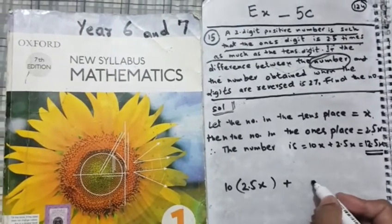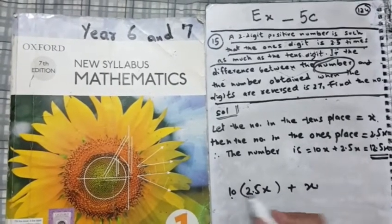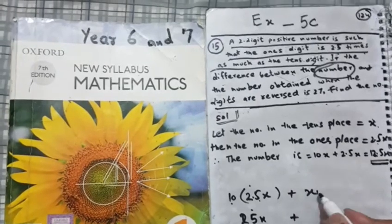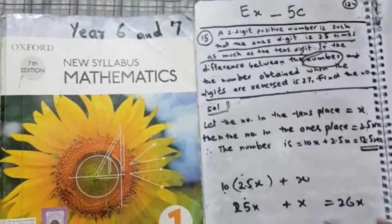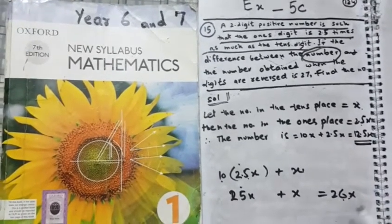2.5 will come here, and x will go here. Ten multiplied by 2.5 gives 25x, and adding x gives 26x. So this is the number obtained when reversed.